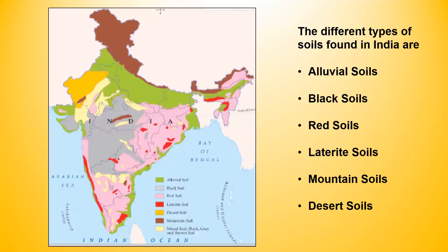The different types of soils that are found in India are alluvial soil, black soil, red soil, laterite soil, mountain soil and desert soil. If you look at the key and read it, you will see where these different soils are located on the map of India.